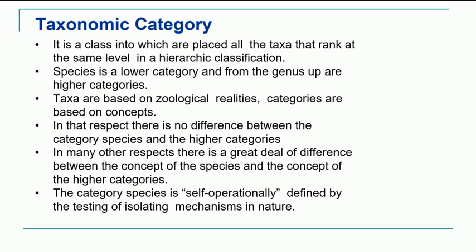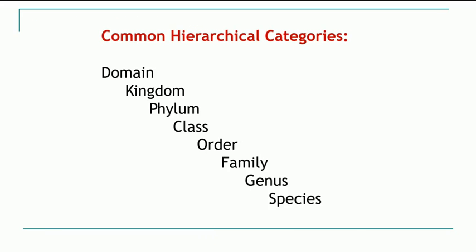The category species can be defined in different ways. These are the common hierarchical categories. The topmost hierarchical category — sometimes we can go ahead of kingdom to the domain level — is domain, followed by kingdom, phylum, class, order, family, genus, and species, and sometimes you can also go to more levels. There are also in-between levels we will see in the next slide. In plant classification, instead of phylum you have division.